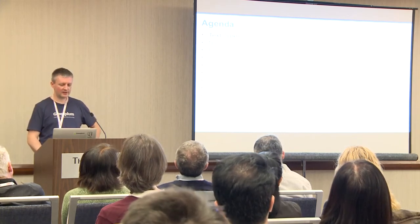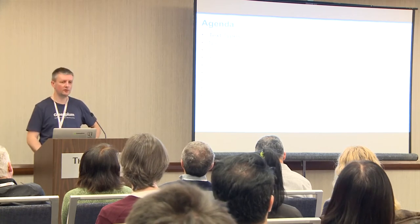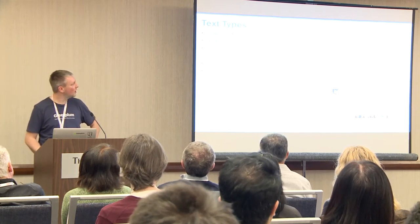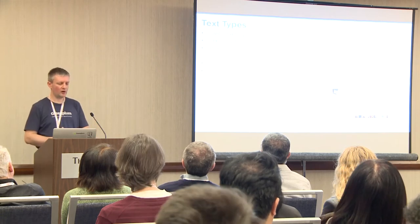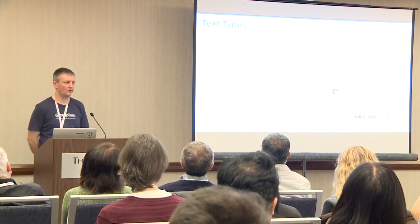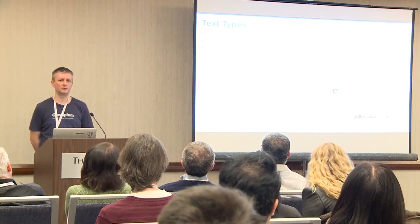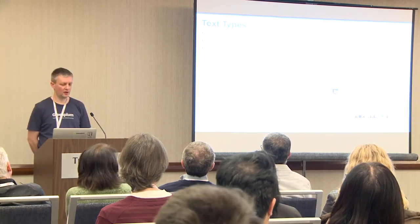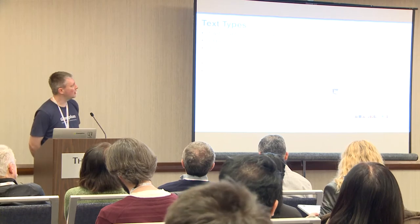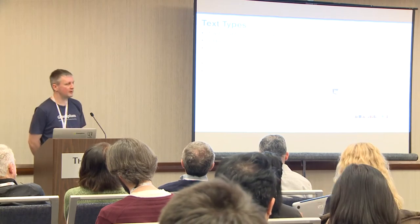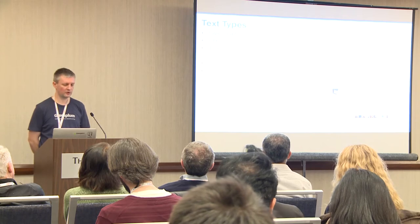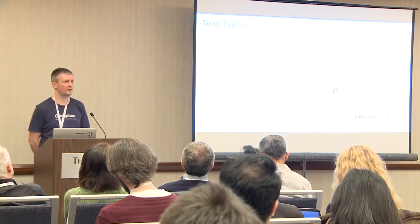Let's start with text. How many text data types do we have? We have three: varchar, char, and text in Postgres. Internally it's all the same — they don't differentiate. The only option you have for varchar and char is you can actually specify your length, which is optional for both of them. For text, you cannot specify your length.